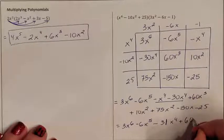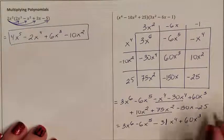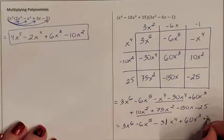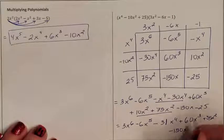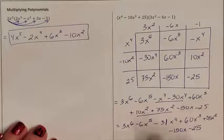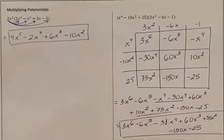60x to the third is the only x-cubed term. x squareds combine to plus 85x squared. x's give minus 150x. And the constant stands alone as negative 25. So we just went ahead and multiplied that using the area model.